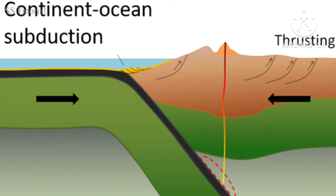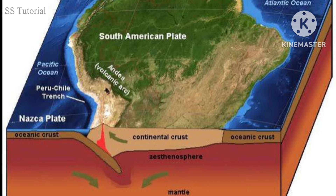If convergence occurs between one oceanic plate and one continental plate, the oceanic plate gets subducted under the continental plate since the oceanic plate is denser, and fold mountains form. Some volcanic activity can be seen here since the oceanic plate is being melted due to subduction. The Andes fold mountains formed due to the convergence of the Nazca plate, which is an oceanic plate, and the South American plate, which is a continental plate.